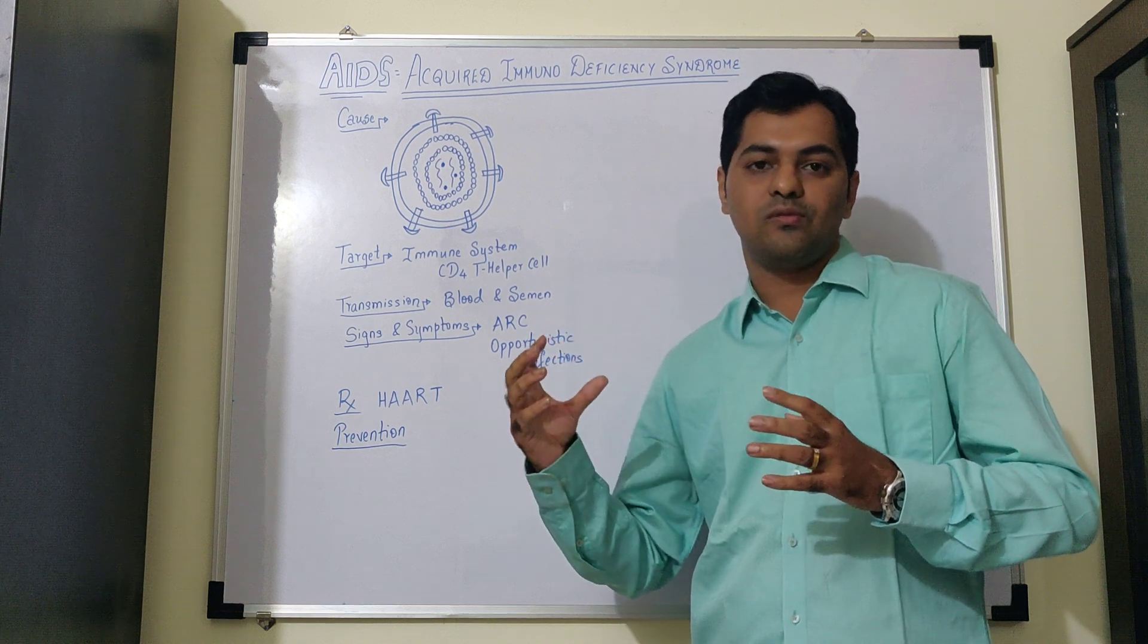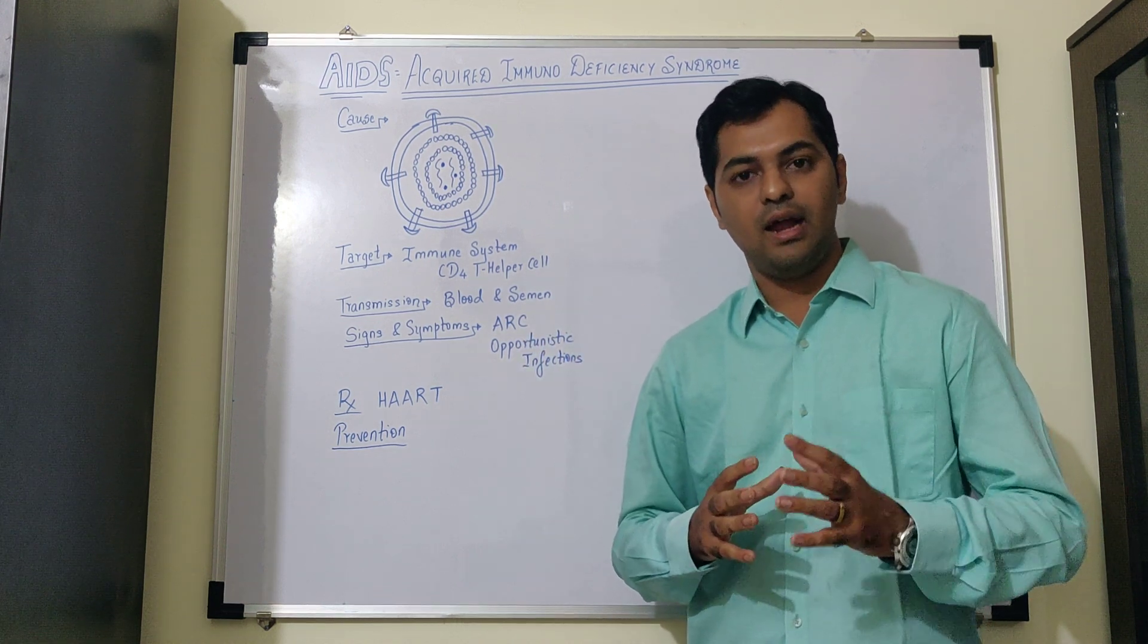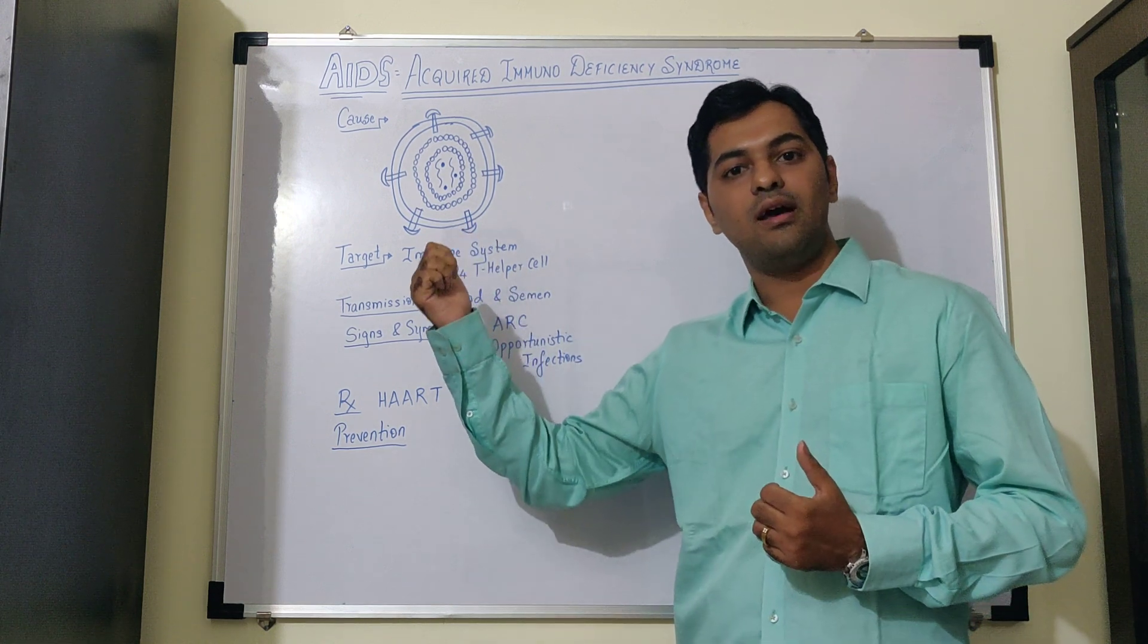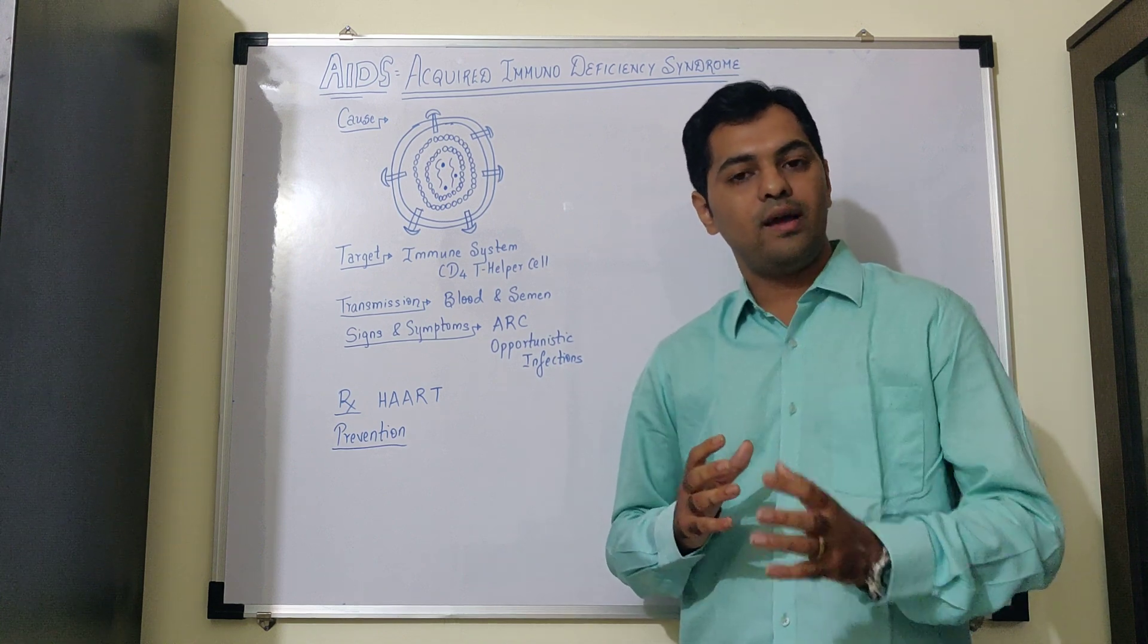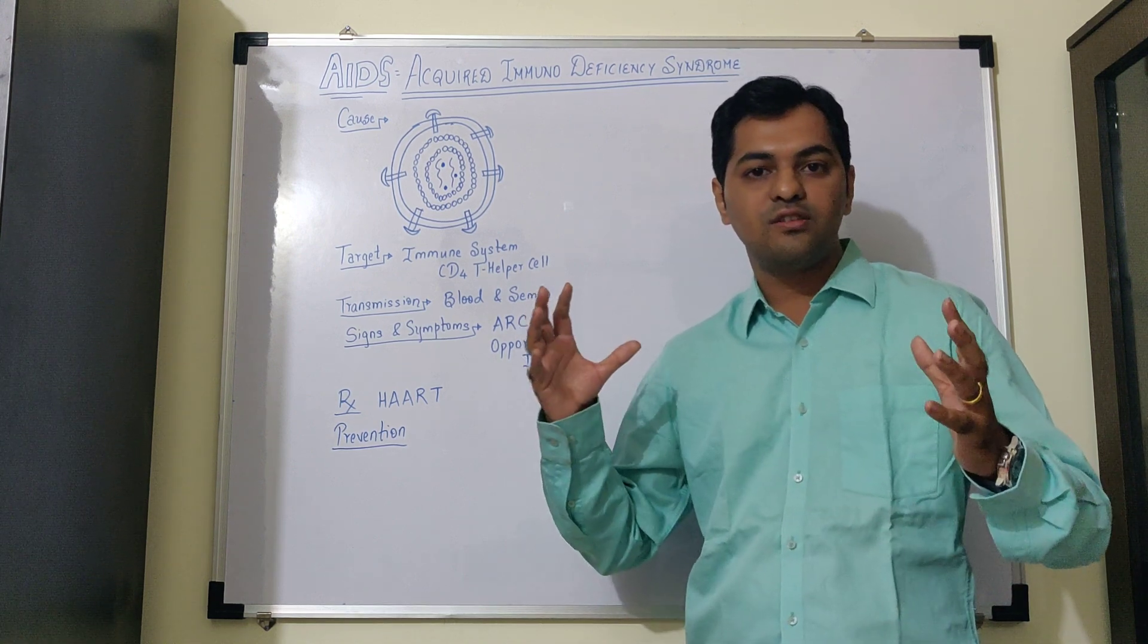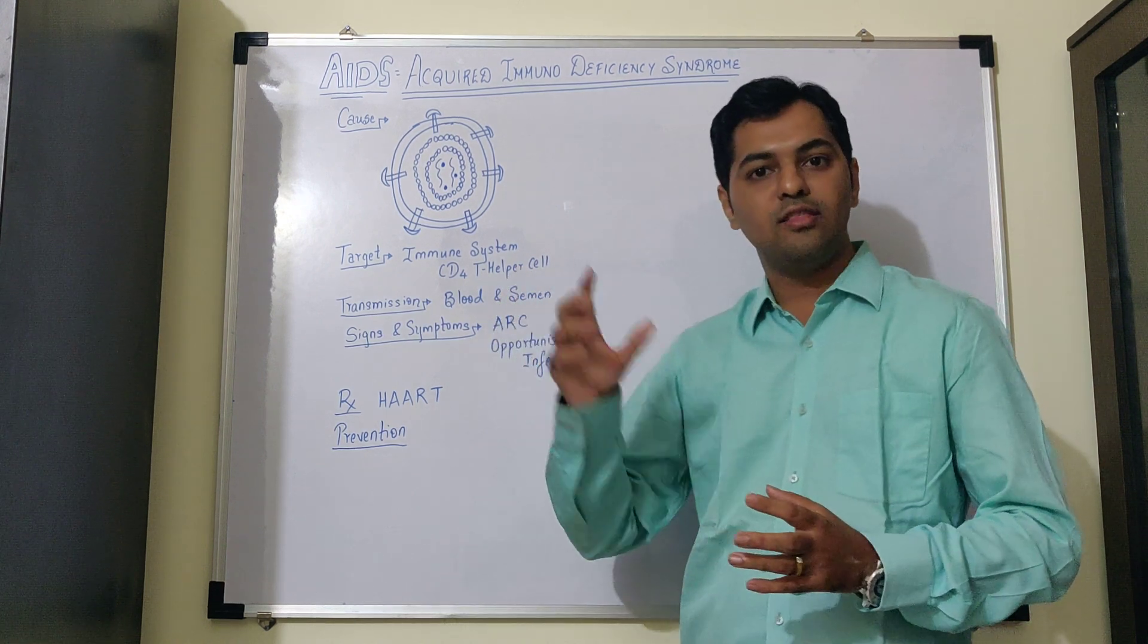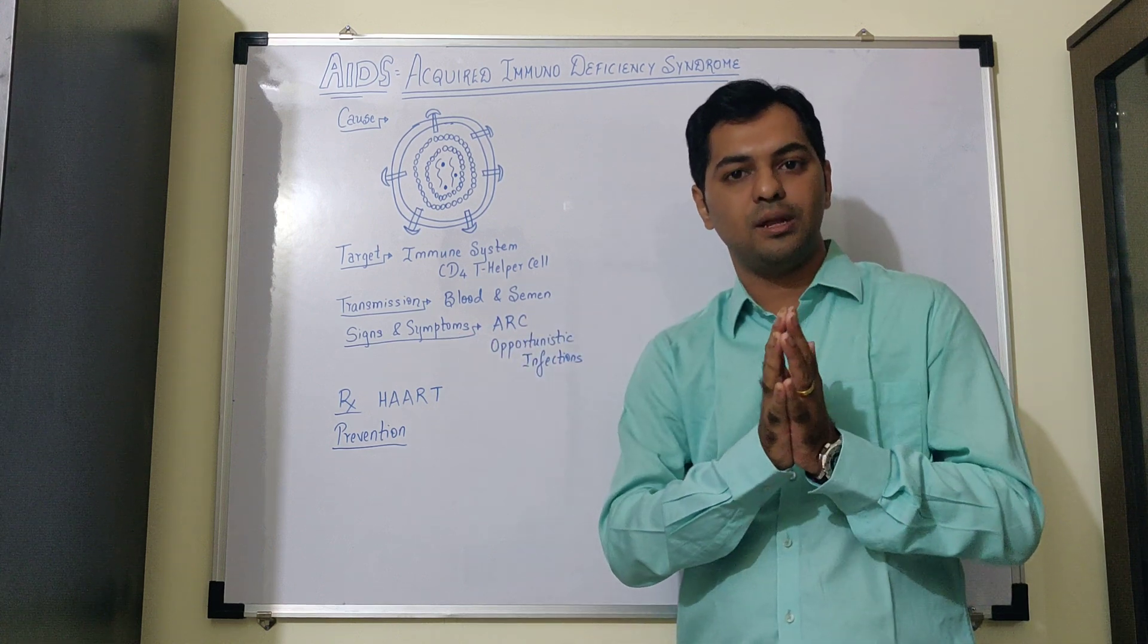How does it target? The HIV specifically enters into macrophages and the helper T cells. And it produces viral DNA from its viral RNA using the process of reverse transcription. The viral DNA that is synthesized, it gets incorporated into the host DNA. So, specifically of the helper T cell and the macrophages, it integrates its viral DNA with the host DNA.